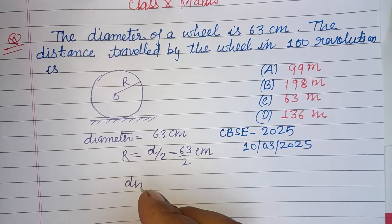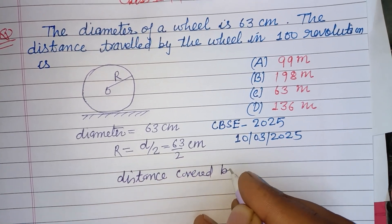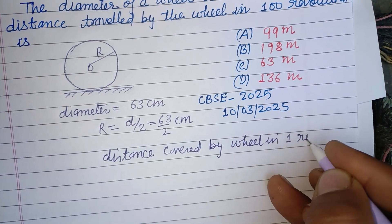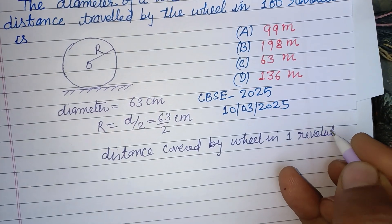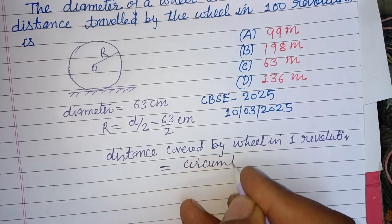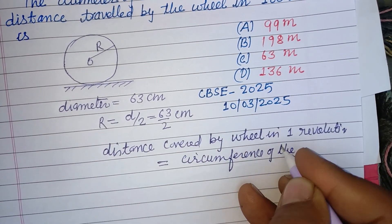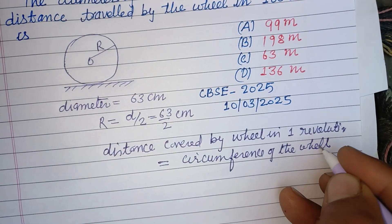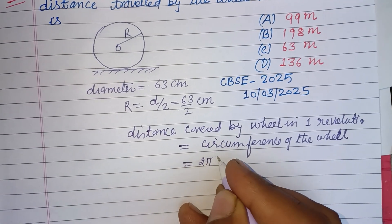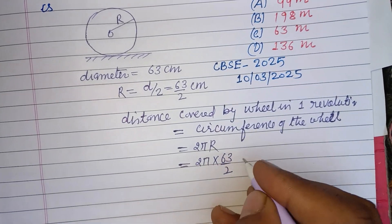Now, distance covered by wheel in one revolution, that is equal to circumference of the wheel. This is 2πr, so 2π into r, where r is 63 by 2 centimeters.